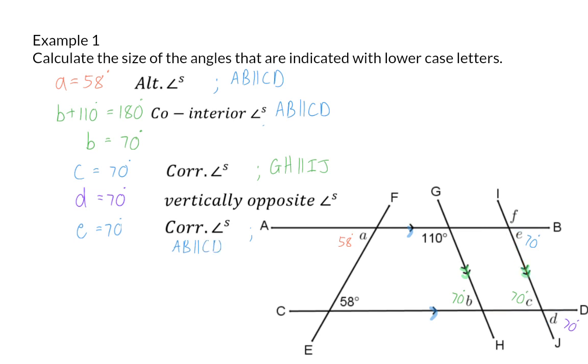And when I now finally move to angle F, you can see that F and E lie at the same point on a straight line, and therefore F plus the 70 degrees of E should equal 180 degrees. And that means that F is 110 degrees.